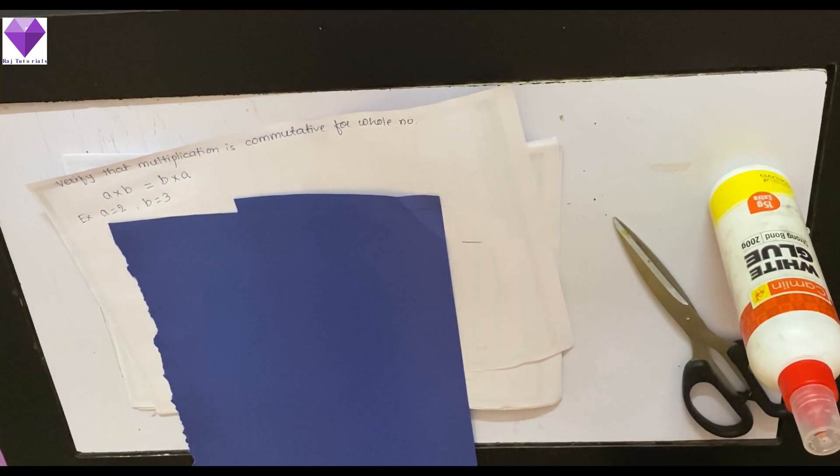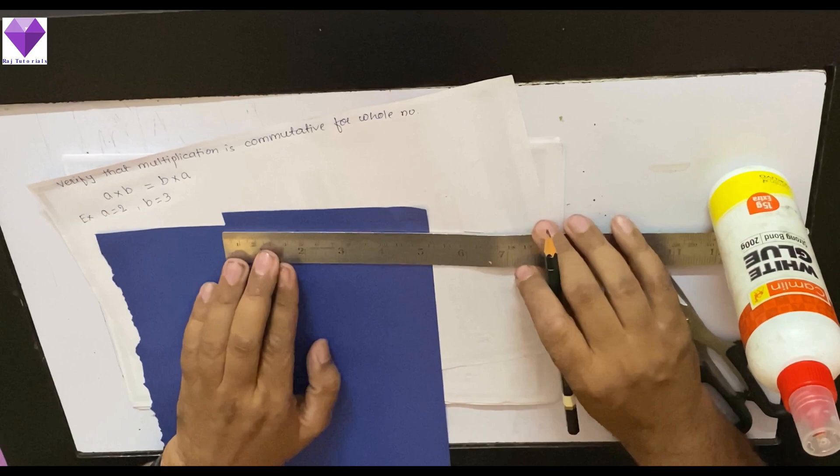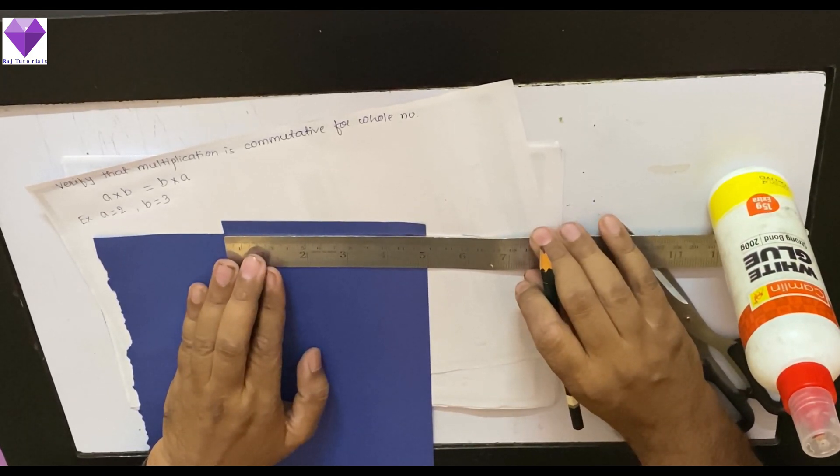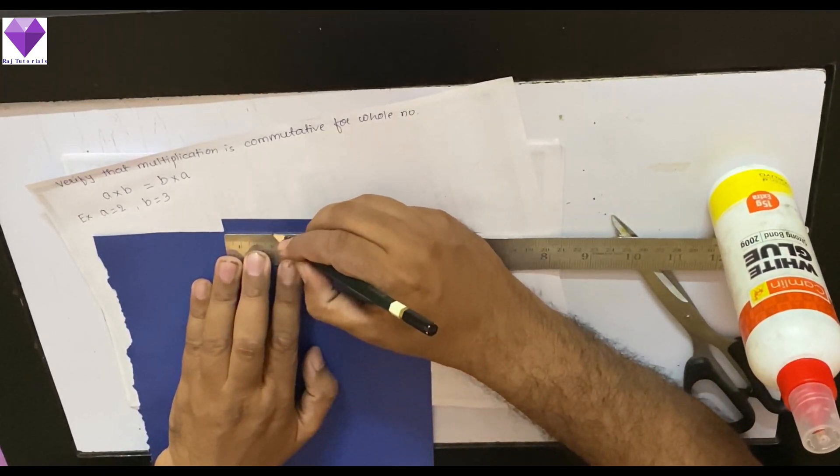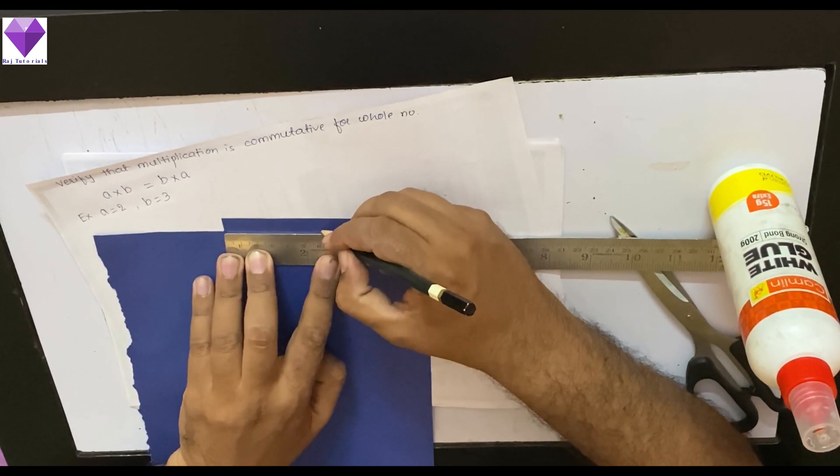Same way, on the blue paper, I will cut 3 centimeter 2 strips. So, 1 centimeter width I have taken and I am making marking of 3 centimeter 2 times and then I will cut that.